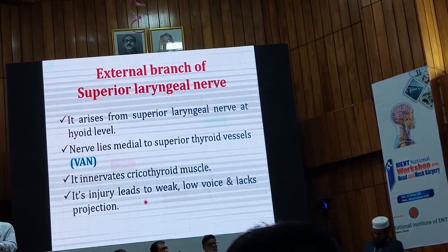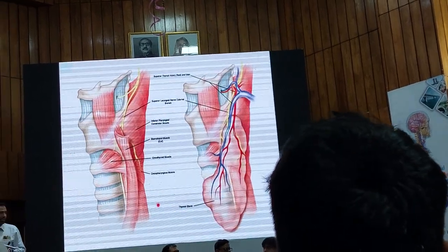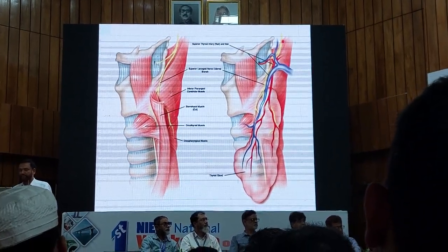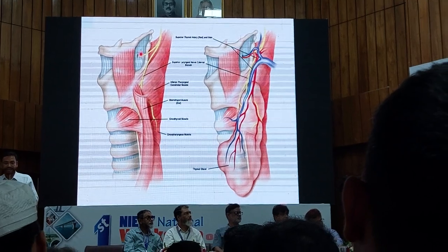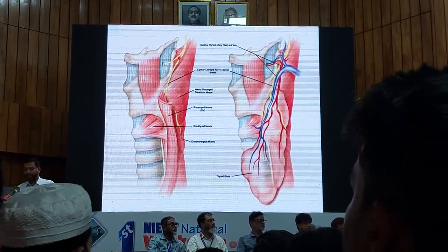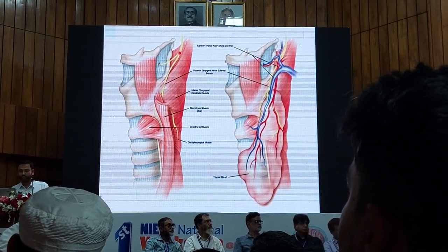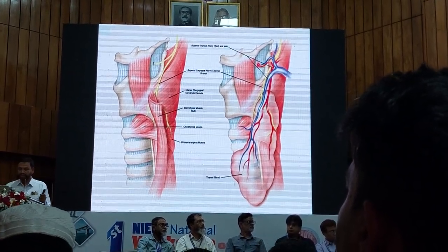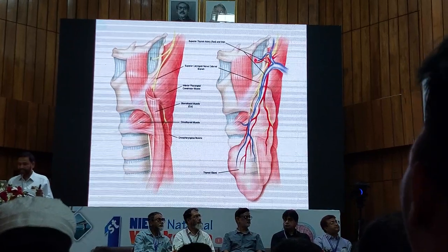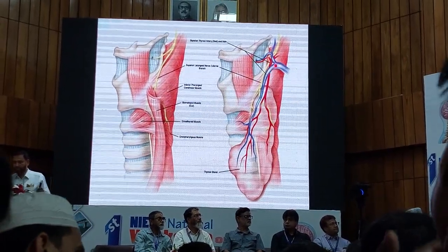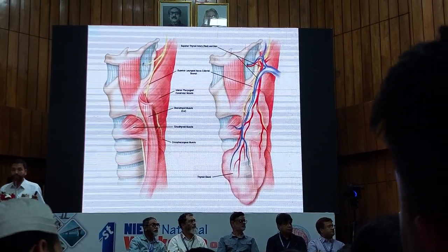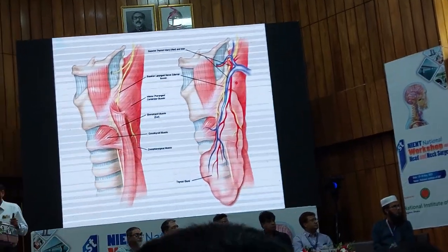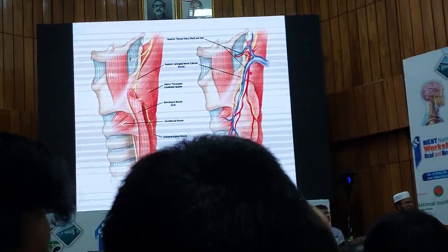Now, coming to the external branch of the superior laryngeal nerve (EBSLN). The superior laryngeal nerve usually arises from the vagus. At the level of the middle of the hyoid membrane, the nerve divides into two: one is the internal branch, another is the external branch. The internal branch goes to the internal larynx along with the superior laryngeal vessels. The external branch goes down, taking a course with the superior laryngeal vessels and keeping from lateral to medial. In the upper part of the thyroid, the vein is more lateral than the artery and the nerve.